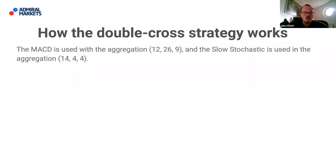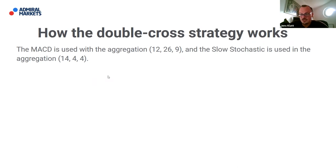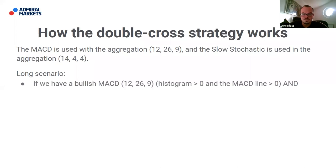The Double Cross strategy uses the MACD with standard aggregation of 12-26-9. Once you open the MACD in MT4 or MT5, this is the standard aggregation. For the slow stochastic, we use the aggregation of 14-4-4 — this smooths things out compared to the more sensitive 5-3-3 setting, giving us a less reactive but more reliable signal for trend confirmation.